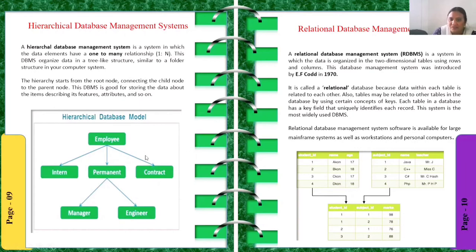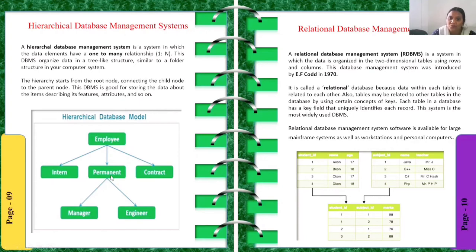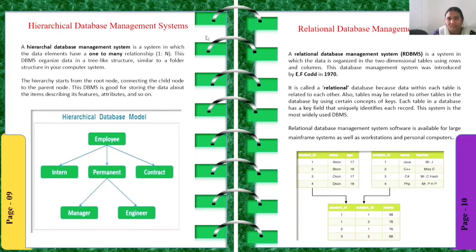According to the hierarchical database model, take the example of an employee. Inside the employee node, we have intern, permanent, and contractor. Under permanent, you can have manager and engineer. The contractor cannot go under permanent manager or engineer. So hierarchical DBMS is one-to-many. You can create your own folder structure as your own system.